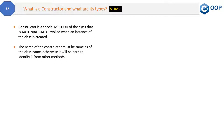A constructor is a special method of the class that is automatically invoked when an instance of the class is created. Whenever you create a class and then create an object of that class, this constructor method will be automatically called — you do not need to call it explicitly. The name of the constructor must be the same as the class name.